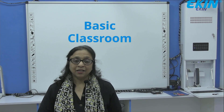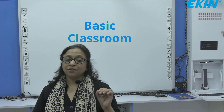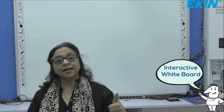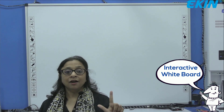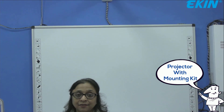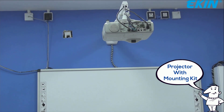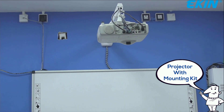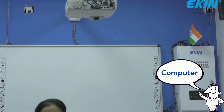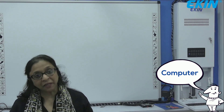So the basic classroom, as you can see, has a few components. What are the components? One, an interactive whiteboard. Two, a short throw projector with a wall mounting kit. Three, a PC. And fourth, a speaker.